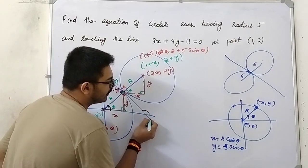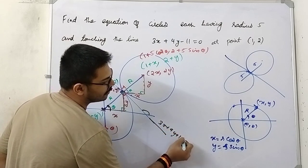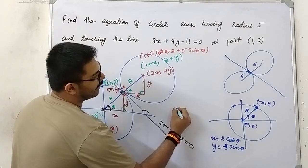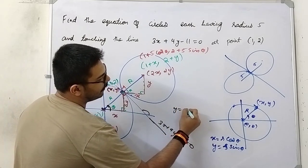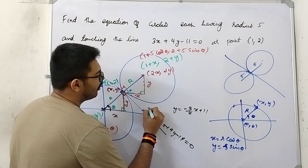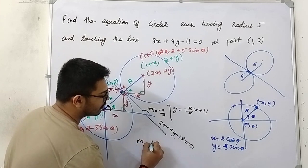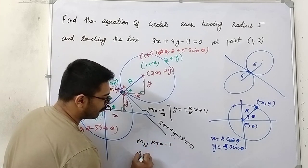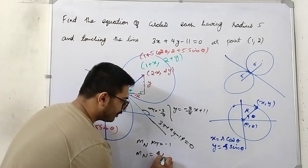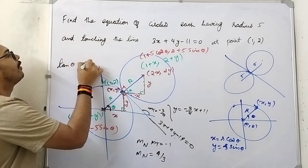What is the inclination of this tangent? The tangent is 3x + 4y − 11 = 0. Writing as y = (−3/4)x + 11, the slope of the tangent is −3/4. We know that slope of normal × slope of tangent = −1, so the slope of the normal is the negative reciprocal of the slope of the tangent, which is 4/3. This means tan θ = 4/3.